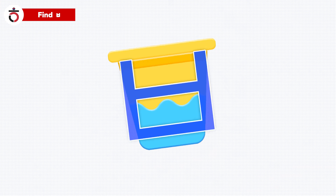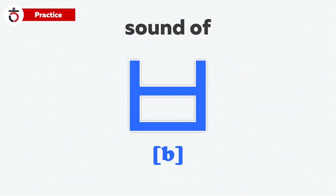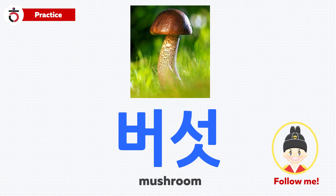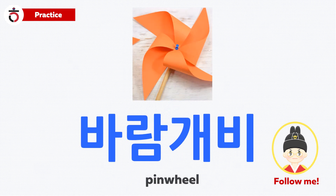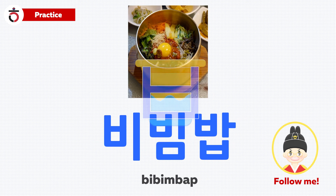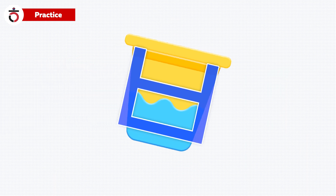Now I think you can recognize the shape of 비읍 for sure. Let's talk about the sound of 비읍. Please listen carefully to the Korean words we have learned today: 비, 버섯; 비, 병아리; 비, 바람개비; 비, 비빔밥. Can you tell any difference between the sound of 비 in 버섯 and 비 in 버켓? They sound like each other.